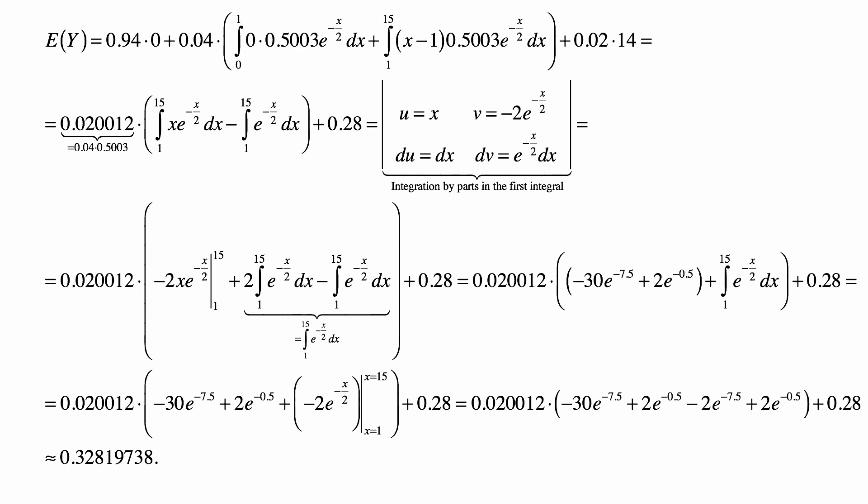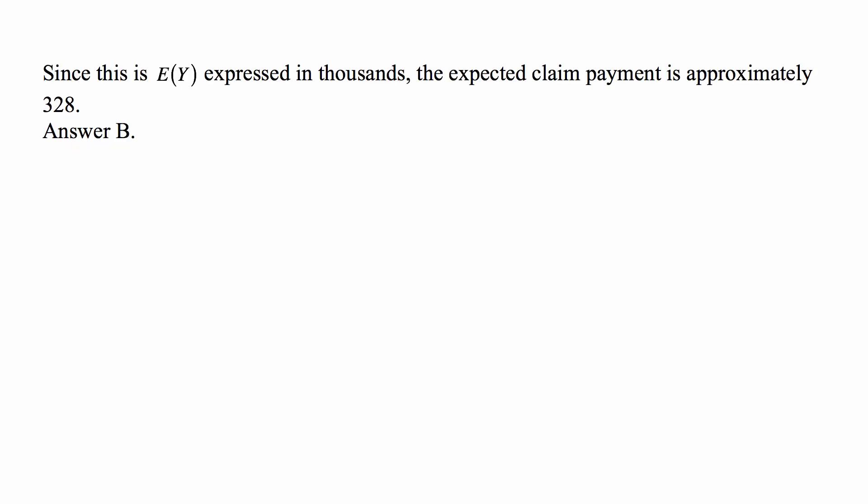And then we just need to calculate all that. It's a little bit of work, but this ends up being 0.32819738, approximately. Now, that answer is in thousands, so since this is E of Y expressed in thousands, the expected claim payment is approximately 328, which is answer B.